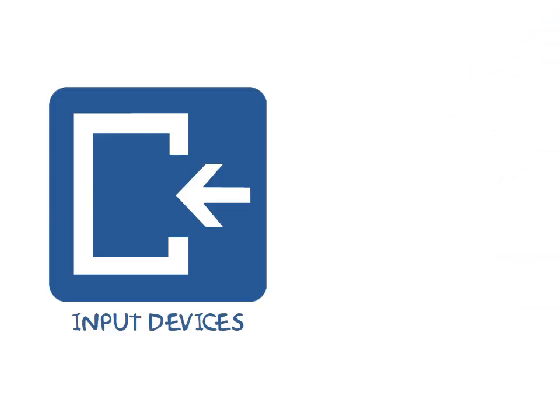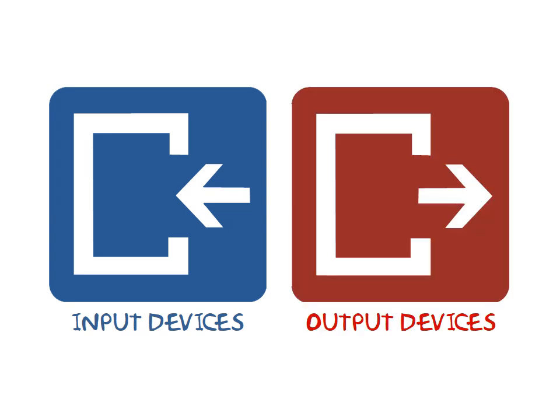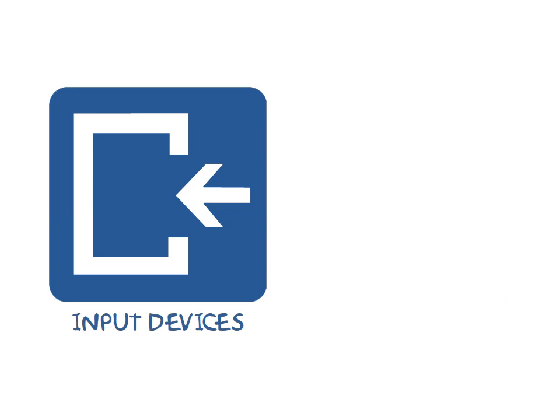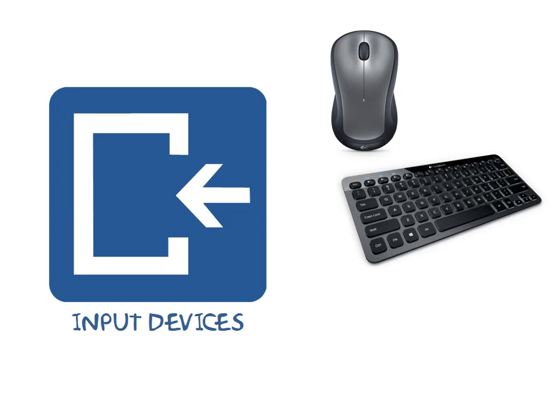There are two main categories of peripherals, which are input devices and output devices. Input devices are ones that allow you to put information into a computer, such as clicking with a mouse, typing with a keyboard, or recording a video with a webcam.